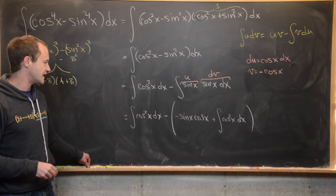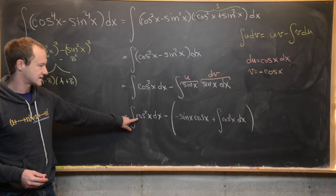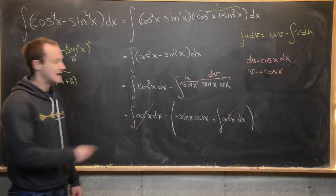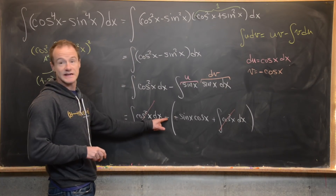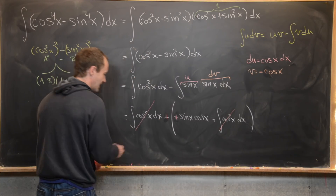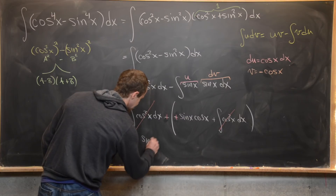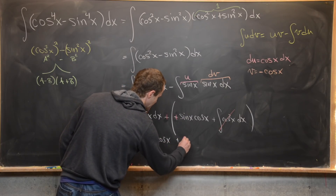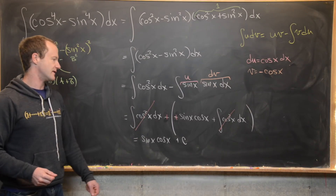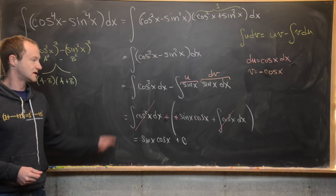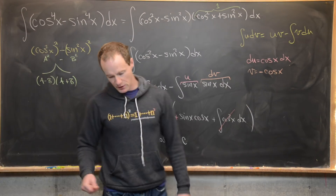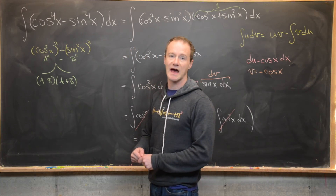We can take this cosine squared x and subtract the other cosine squared x — those cancel down to zero. Distributing the minus sign gives us a plus, and we end up with sine x times cosine x, plus a constant. Let's clean up the board and look at another example.